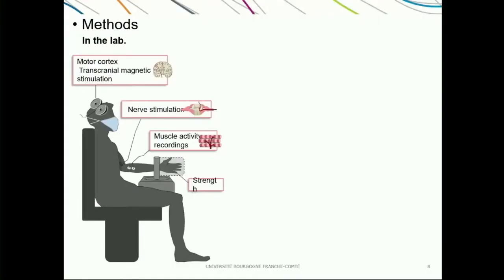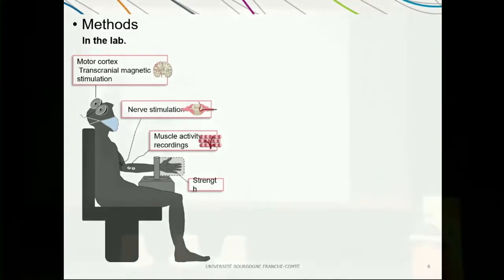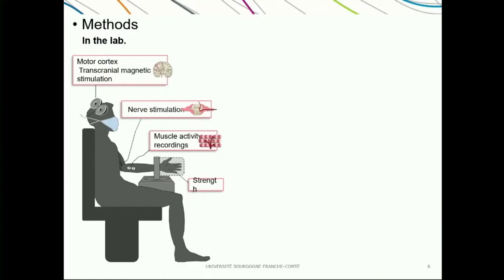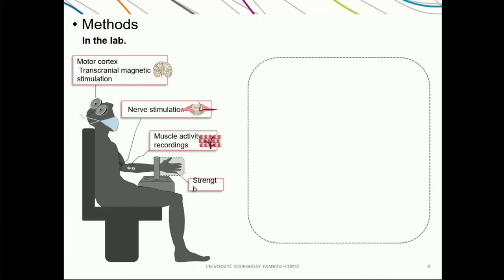To give you a more concrete idea, this is what happens when participants come into the lab. We work with healthy participants and we use a technique called transcranial magnetic stimulation. We apply a coil over the participant's head and stimulate the brain in a non-invasive way to evaluate corticospinal and cortical excitability changes. We also use electrical nerve stimulation to induce reflexes, and changes in the amplitude of the response can indicate changes at the spinal cord level. We also record muscle activity and wrist strength with a dynamometer.